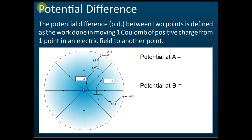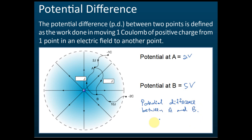We just learned that the potential at point A is 2 volts and the potential at point B is 5 volts. So what is the potential difference between A and B? The potential difference is 3 volts. Why? Because 5 minus 2 equals 3 — the difference is 3 volts. So the potential difference between point A and point B is 3 volts.